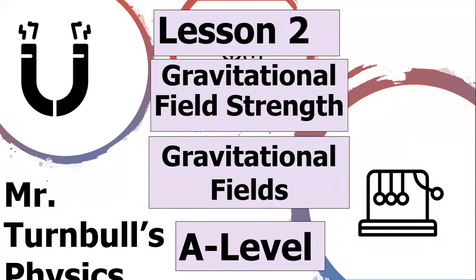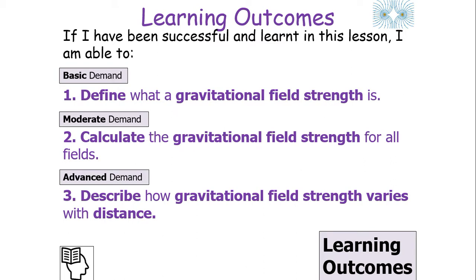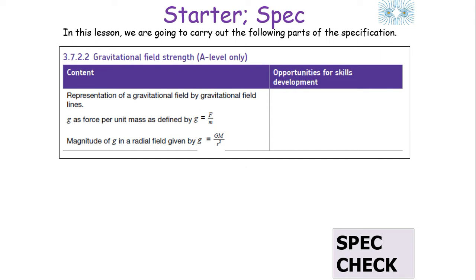Hello and welcome to today's lesson, looking at gravitational field strength, which forms part of the gravitational fields topic in the AQA A-level physics specification. In today's lesson, we're going to calculate the gravitational field strength of a gravitational field. We should be able to define what gravitational field strength is, calculate it for all fields, and describe how it varies with distance. This falls under specification point 3.7.2.2, gravitational field strength, found on paper 2.